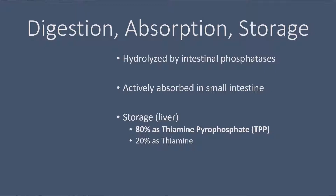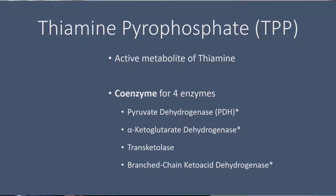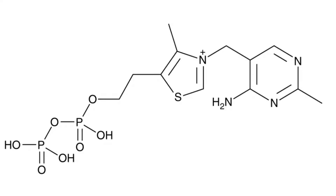Along with other nutrients we eat, thiamine gets digested and broken down in the digestive tract before being absorbed and then stored in the liver. Remember, thiamine — like all B vitamins — is water soluble, so not much is stored. Of what is stored, 80% will be stored as TPP, which is the active metabolite of thiamine, and 20% will be stored as the original thiamine molecule.